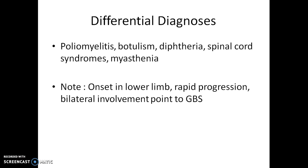The differentiating features of GBS are: it always starts in the lower limbs and progresses to the upper limbs; there is rapid progression over days or weeks; and there is bilateral involvement — all four limbs are affected. If you have all three of these features together, you can pinpoint your diagnosis to GBS.